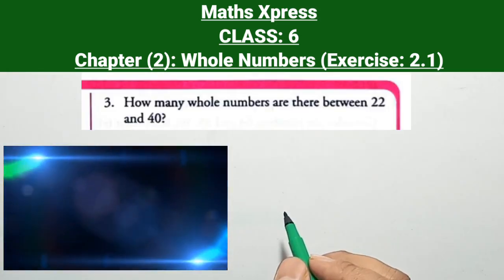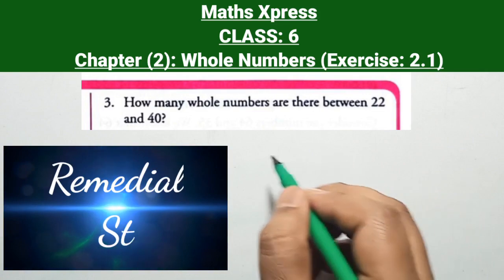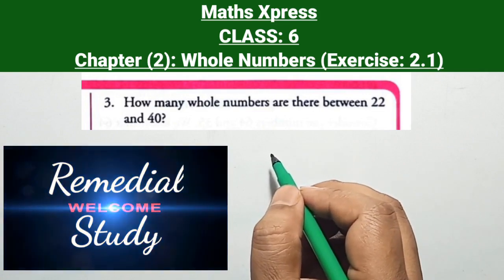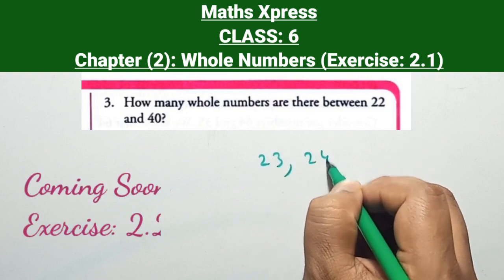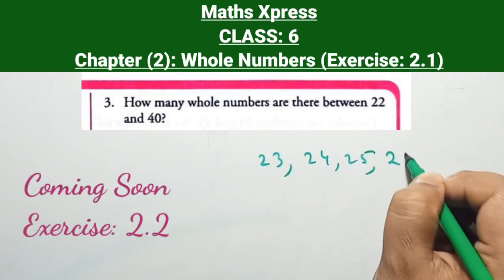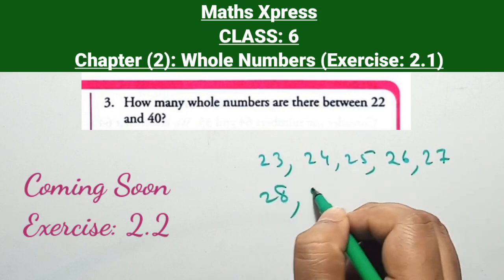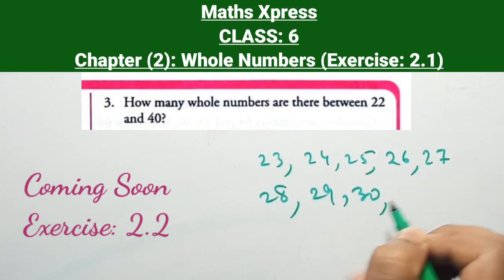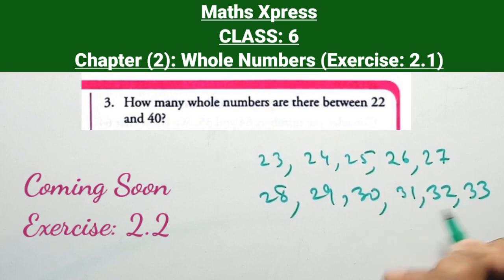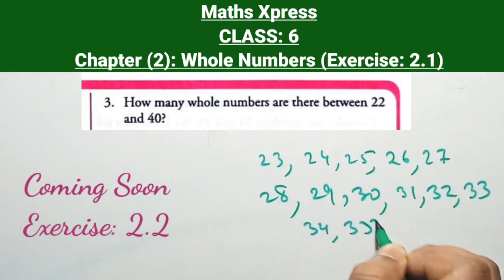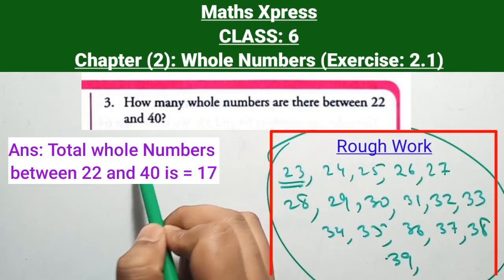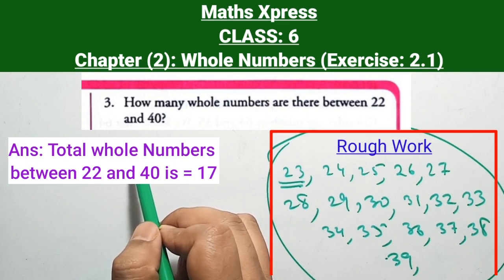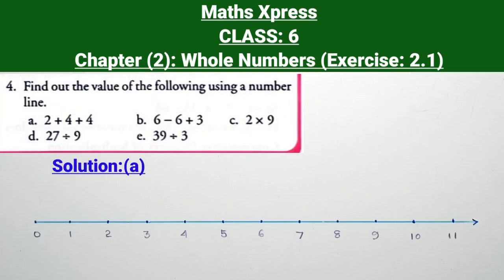The whole numbers between 22 and 40 are: 23, 24, 25, 26, 27, 28, 29, 30, 31, 32, 33, 34, 35, 36, 37, 38, 39. Total whole numbers between 22 and 40 is equal to 17.